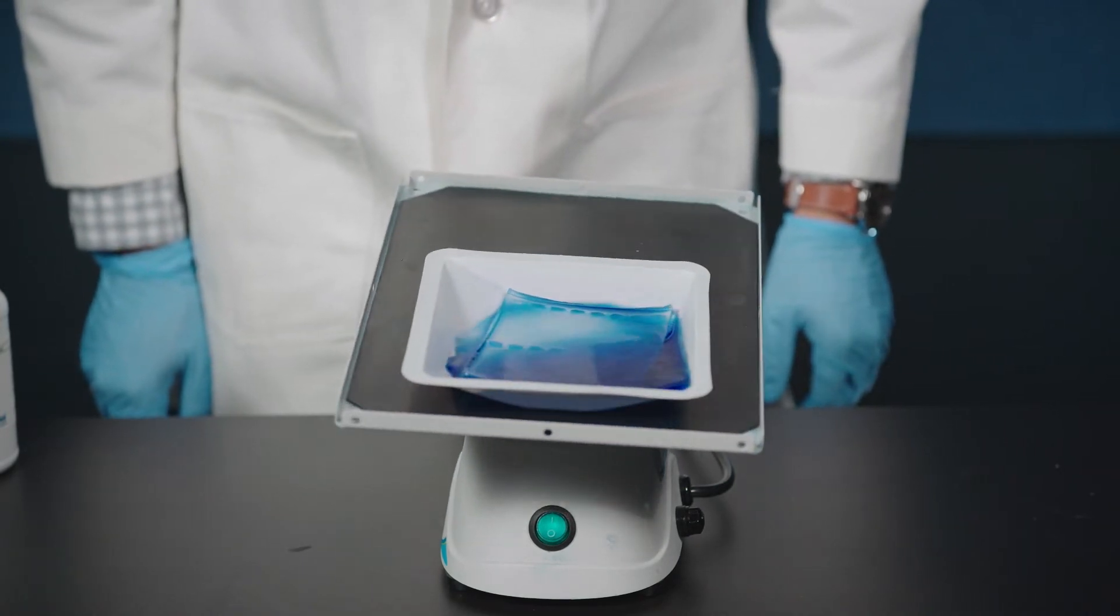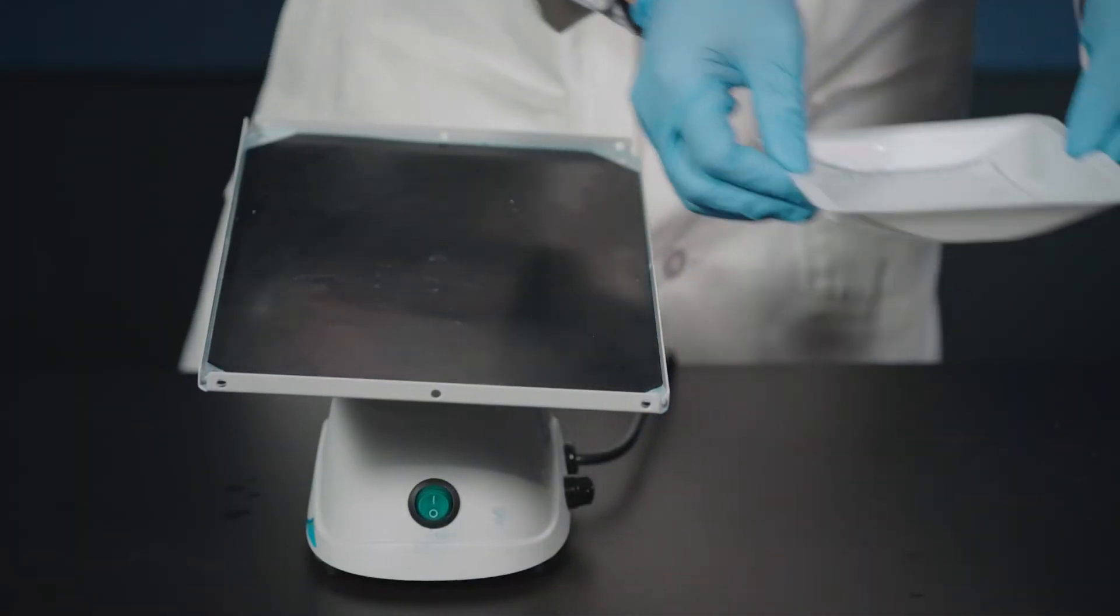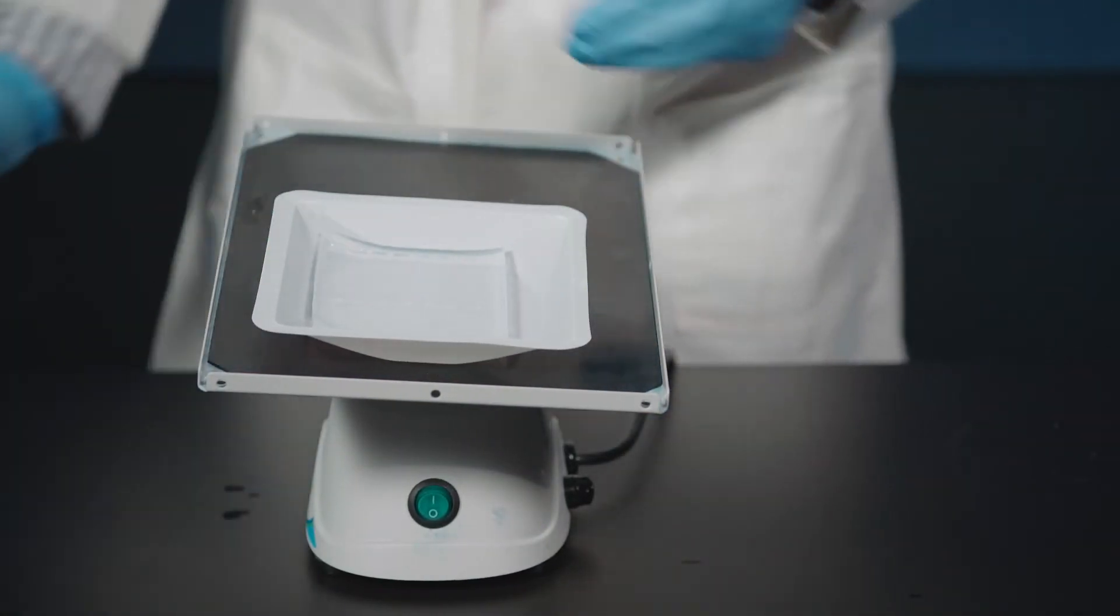Alternately, this can be done without a rocker. If so, intermittently agitate by hand. After pouring off the excess stain back into the bottle for future use,